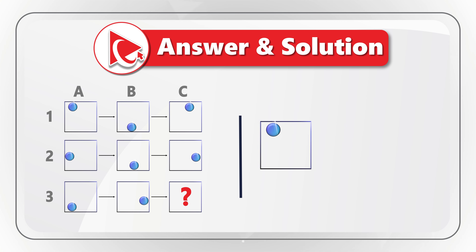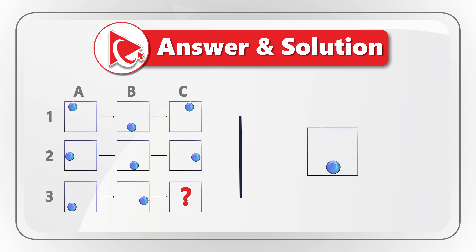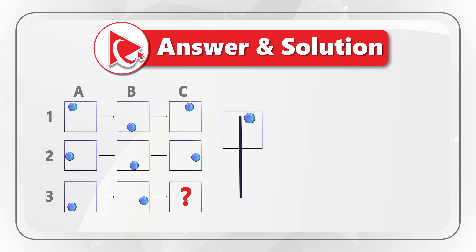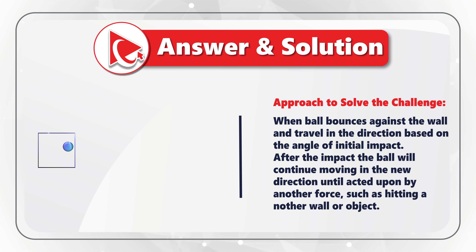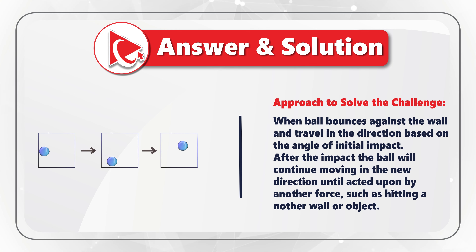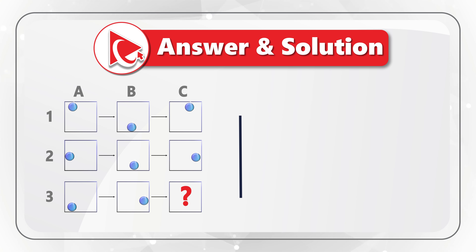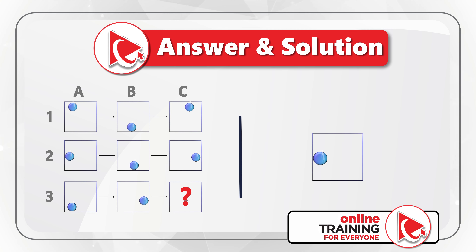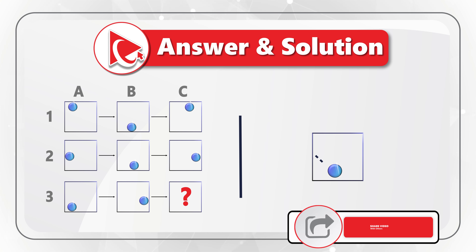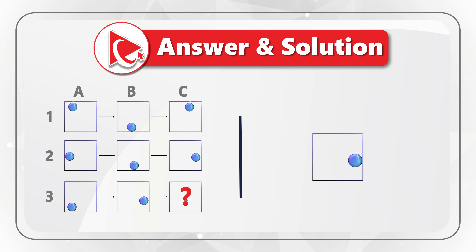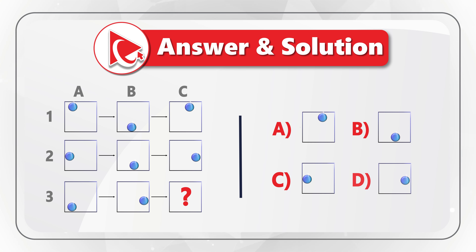Let's start by looking at object A1. The ball is in the upper left corner and it moves downward toward the middle of the bottom section — exactly where we see the ball in object B1. After that, the ball bounces and moves upward, as we see in C1. When the ball bounces against the wall, it travels in the direction based on the angle of the initial impact. Looking at row 2 confirms this pattern. In row 3, the ball moves from position 1 to position 2 and then to position 3. So the correct answer here is Choice C.